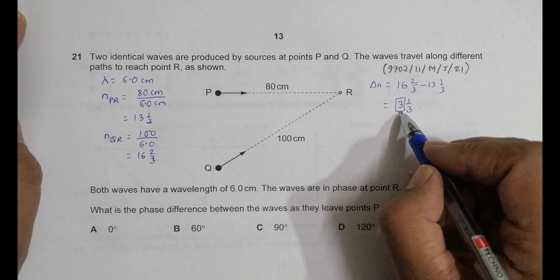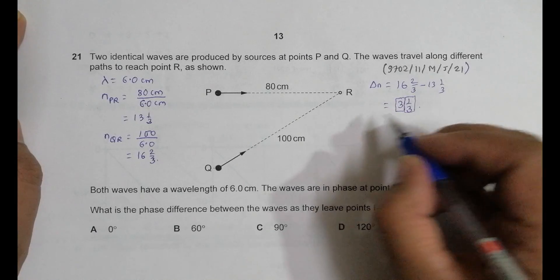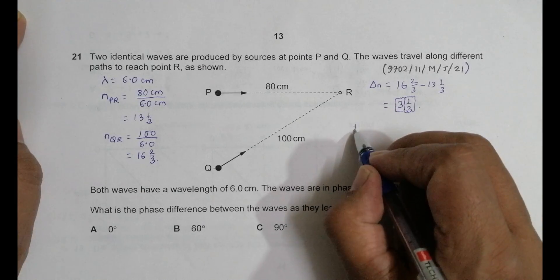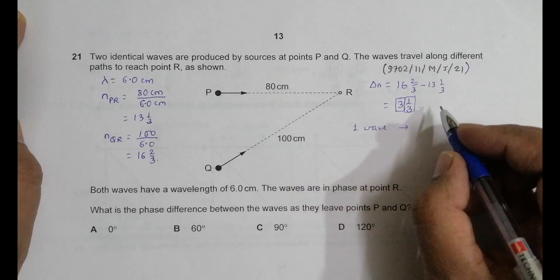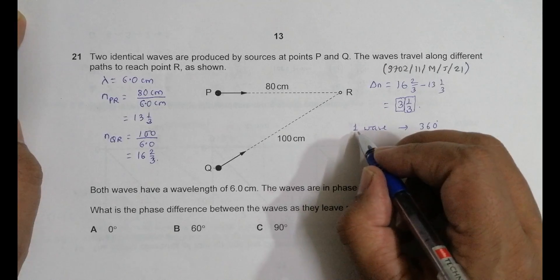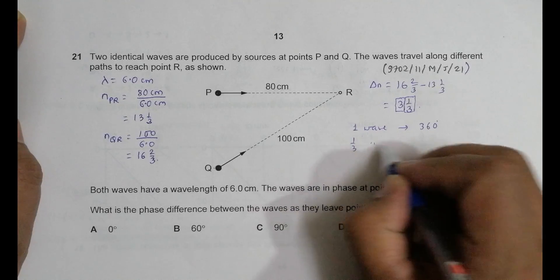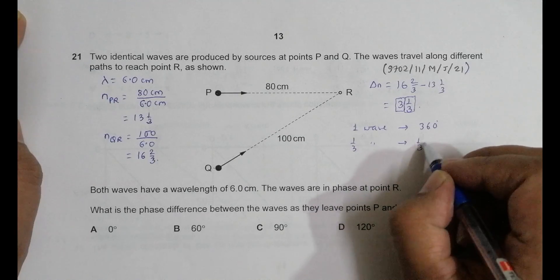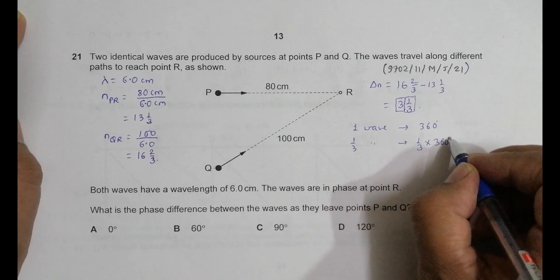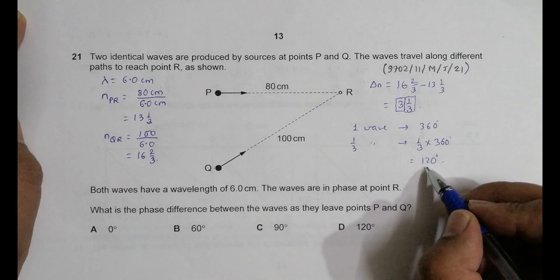So this does not contribute to the wave phase difference, only this portion contributes to the phase difference. So now if there is a difference of one wave, the phase difference in terms of angle is 360 degree. One wave is one cycle, so 360 degree. So if it is 1/3 wave, then it should be equal to 1/3 into 360 degrees and that's equal to 120 degrees.